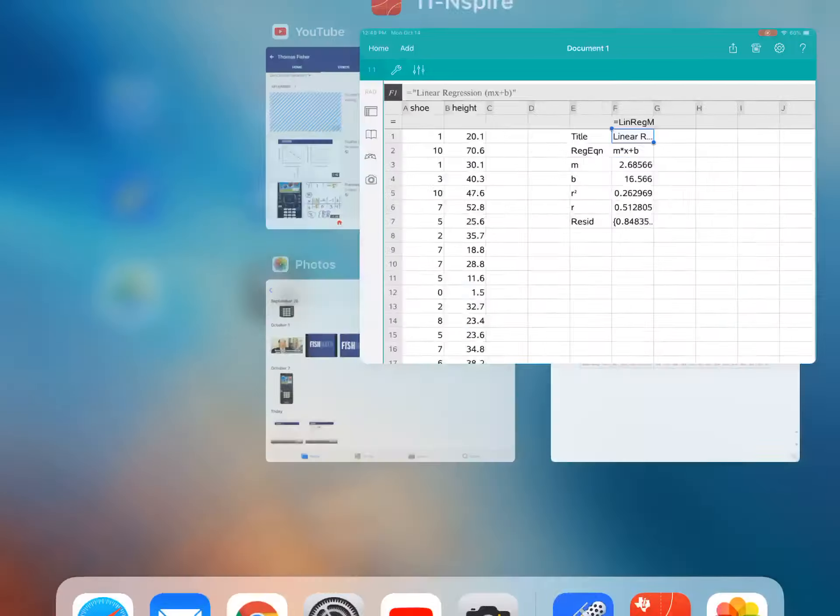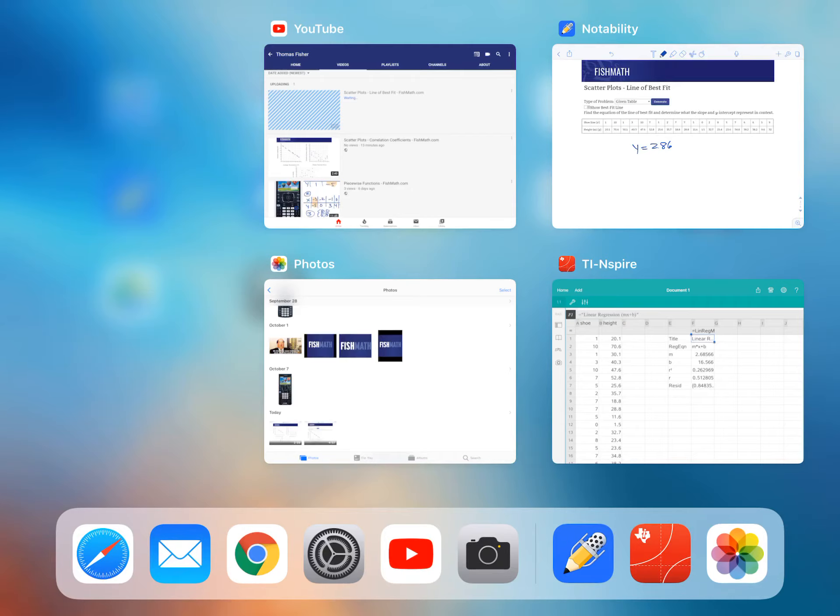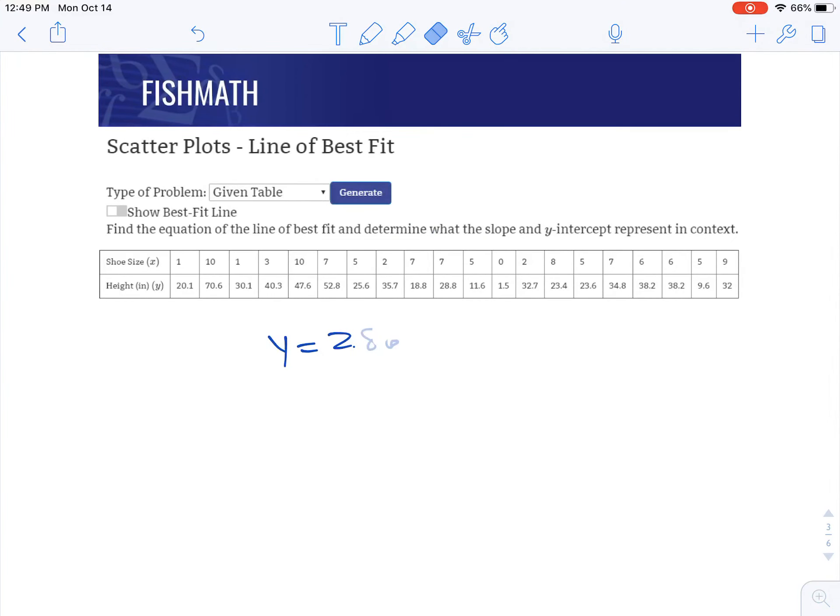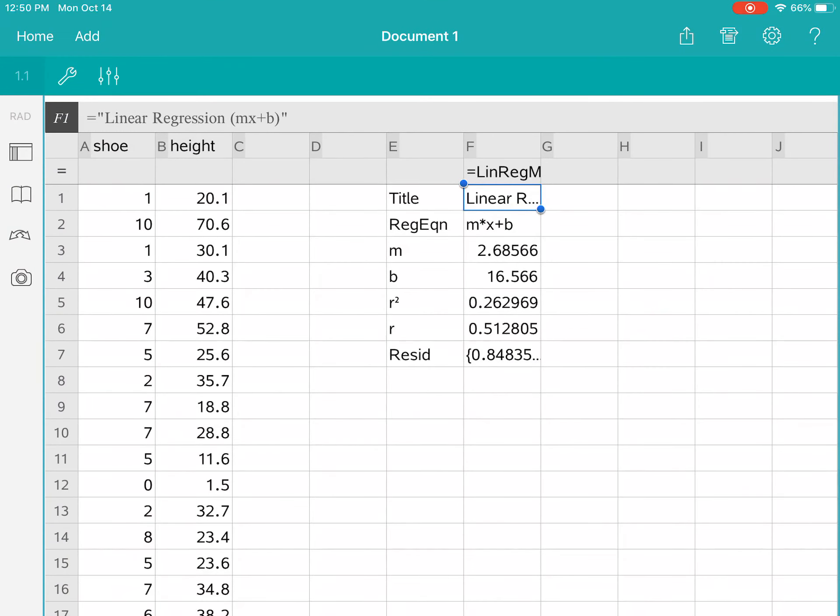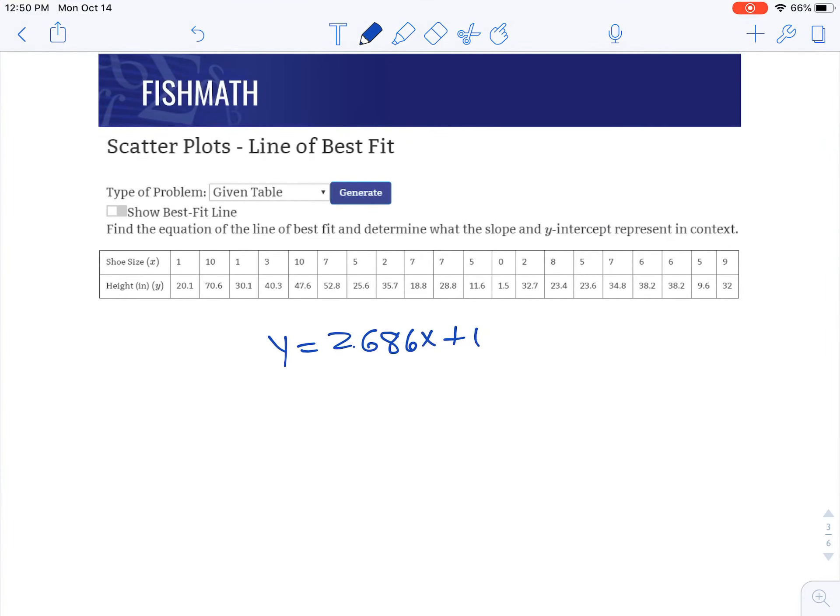So 2.686 would be this slope, so y equals 2.686—oh there it is, 2.686, it didn't sound right—2.686x plus the y-intercept which is 16.566, and that would be our equation of the line of best fit.